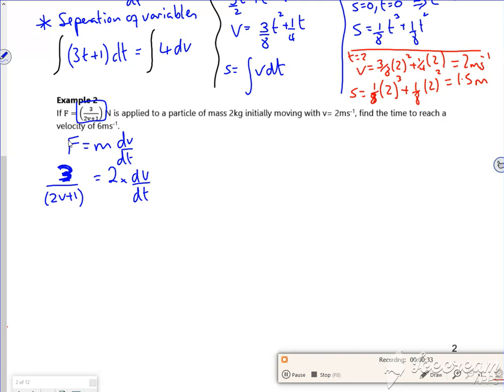So V's on the right, T's on the left, so I've got 3 dt, it's 2 lots of 2v plus 1 dv, all integrated.